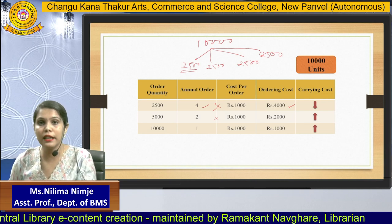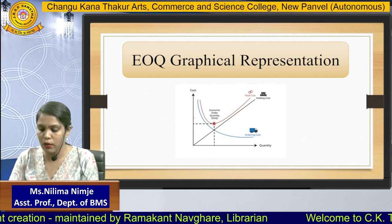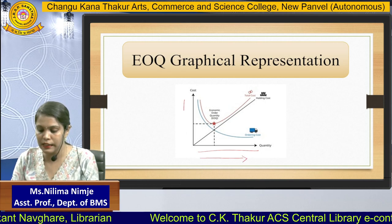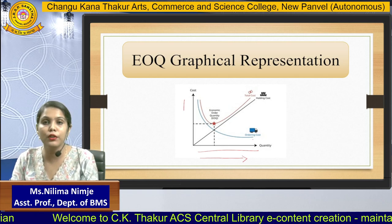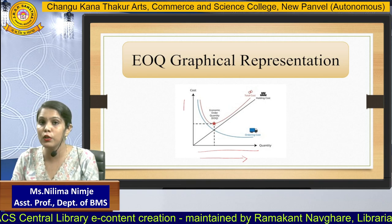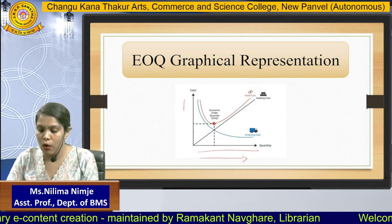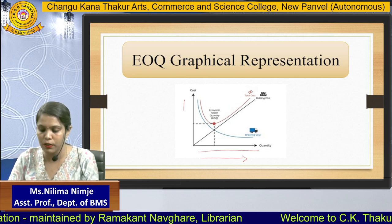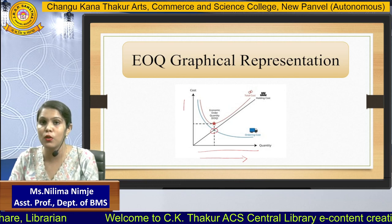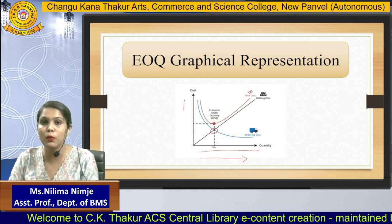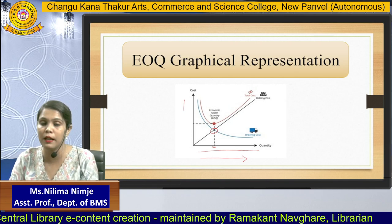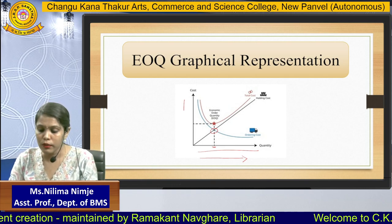So you can see: as ordering quantity increases, the ordering cost lowers down, and the carrying cost increases simultaneously. Let us reflect these numbers in the graph — cost is on the Y-axis and quantity is on the X-axis. The ordering cost graph curves downward as quantity increases, while the holding cost (carrying cost) graph increases upward. Now there is a common intersection point where both ordering cost and carrying cost are completely minimum. This intersection point gives us the optimal quantity at which we should place an order — that is the Economic Order Quantity.